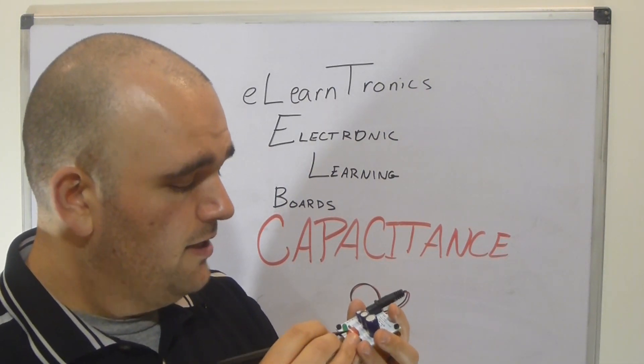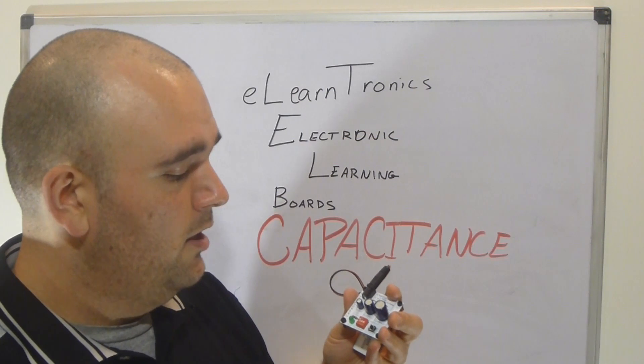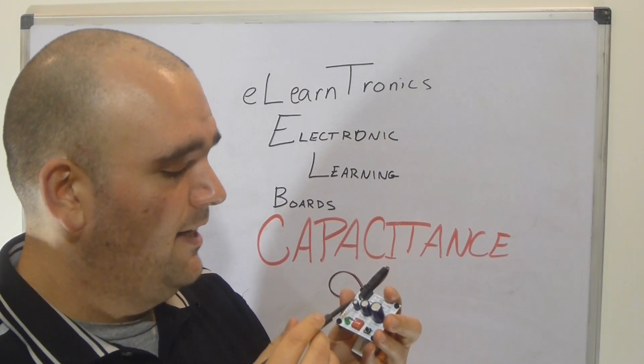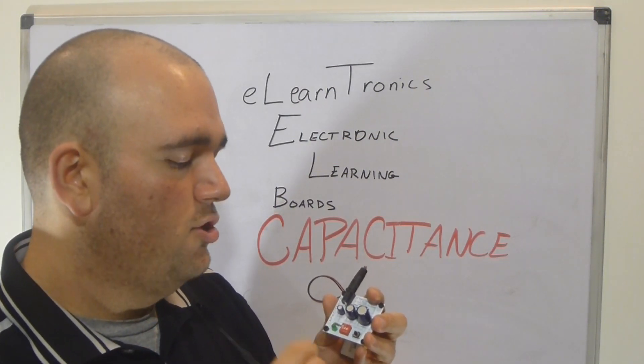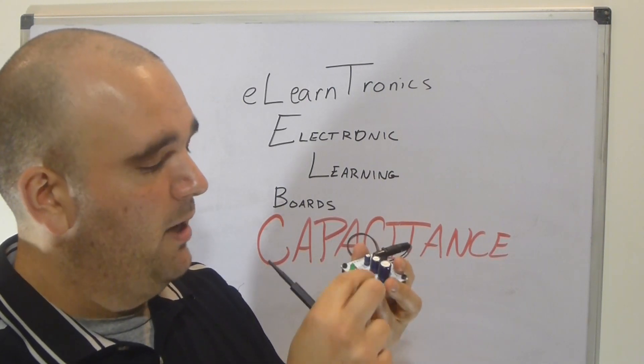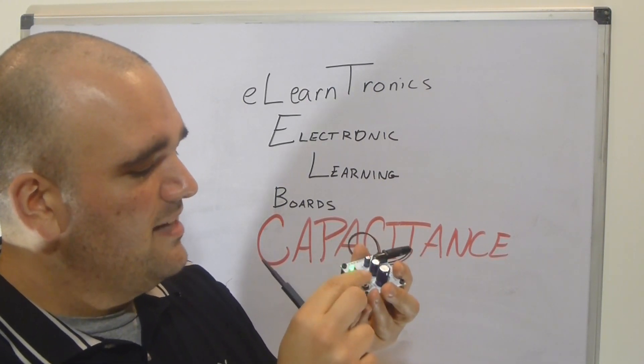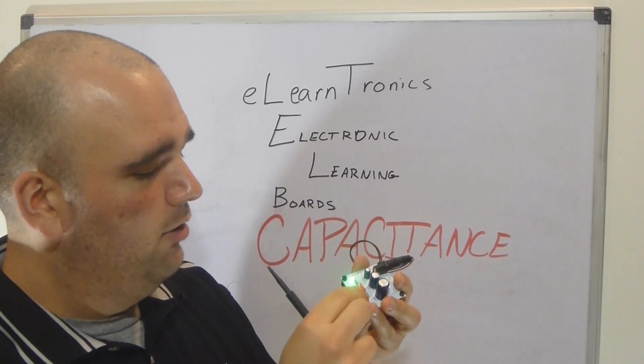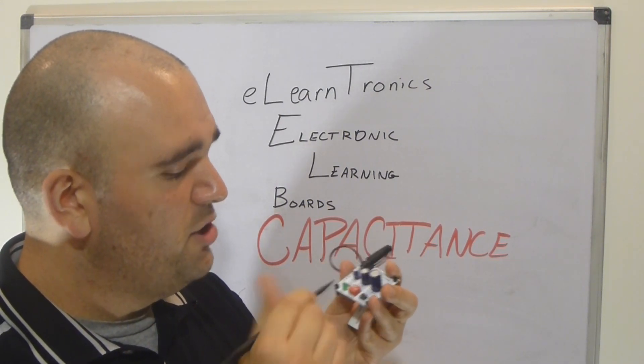But if we flip on, let's flip on switch number one. What that's doing is it's connecting our 100 microfarad capacitor to the circuit. So now, when we hit the button, well, it kind of stays on for a second and then fades out. All right, well, what if we turn on number two?